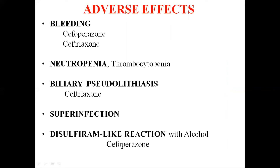Bleeding is seen with certain cephalosporins like cefoperazone and ceftriaxone, both third generation cephalosporins. These cephalosporins contain a methylthiotetrazole or similar side chain structure, making them prone to cause bleeding due to hypoprothrombinemia. This is mostly seen in cancer patients, malnourished patients, or those with renal failure. This bleeding can be prevented because it occurs due to blockage of the vitamin K epoxide reductase enzyme — similar to warfarin — and can be prevented by concurrent administration of vitamin K 10 mg twice daily.